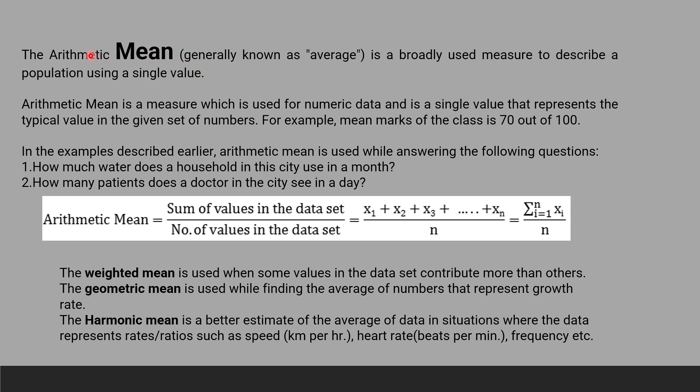It is also known as arithmetic mean, generally known as average. It is broadly used to describe a population using a single value. Arithmetic mean is a measure used for numeric data and is a single value that represents the typical value in the given set of numbers. For example, mean marks of a class is 70 out of 100.